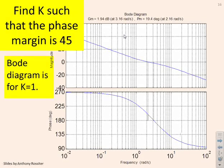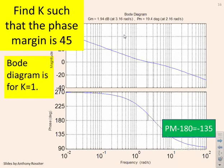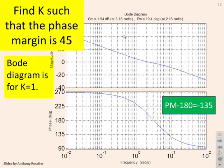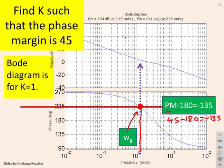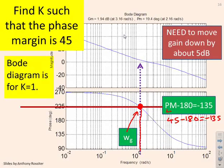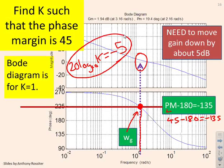Another example: find k such that the phase margin is 45°. We use the formula: 45 − 180 = −135°. So we look for the intercept with the minus 135° line on the phase plot — that determines the gain crossover frequency. Taking that up to the gain plot, we see the gain needs to move down by about 5 dB. Therefore, 20·log₁₀(k) = −5, which tells us what k must be.